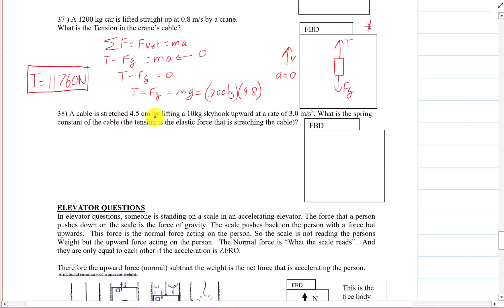A cable is stretched 4.5 centimeters by lifting a 10 kilogram skyhook upward at a range of 3 meters per second squared. What is the spring constant of the cable? The tension in the elastic is the elastic force that's stretching the cable. So there is a tension up and a force of gravity down. And it is accelerating up. So we definitely know that the tension is winning.